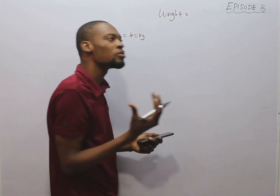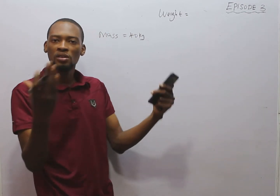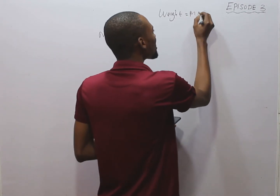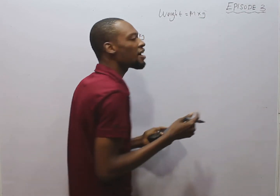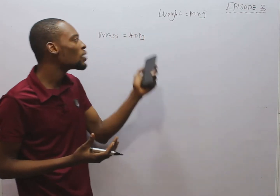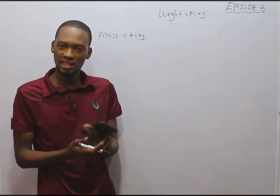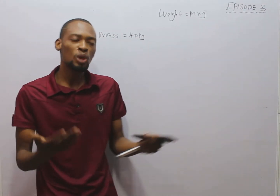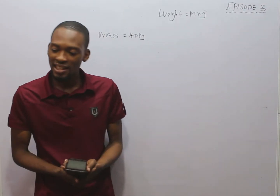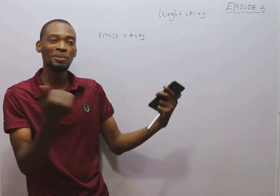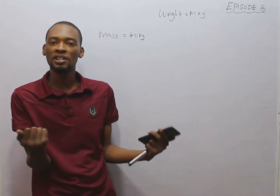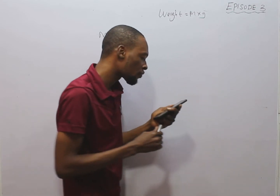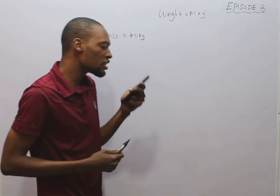Weight is the Earth's pull on a body, which means weight equals mass times gravity. When you hear 'body,' it simply means objects — it can be a bag of rice, a fridge, a television, or even a human being. We just say 'the body' without specifying.